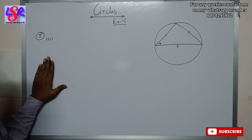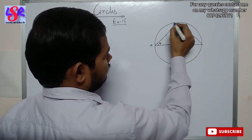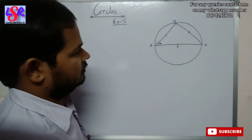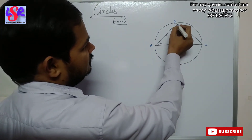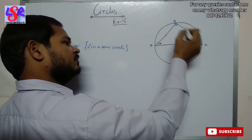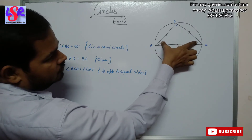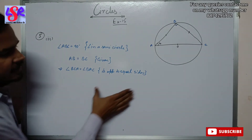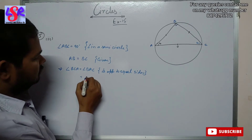Now question 5 third part. We have to find the value of X. We name the points A, B and C, with O as the center of the circle. Therefore AC is the diameter and angle ABC equals 90 degrees as angle in a semicircle. We are given AB equals BC, so as two sides are equal, angle BCA equals angle BAC as angles opposite to equal sides. We consider this angle also as X.